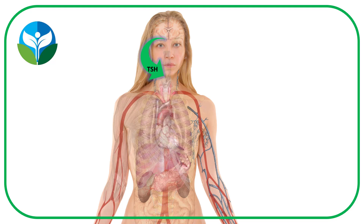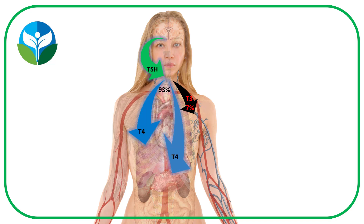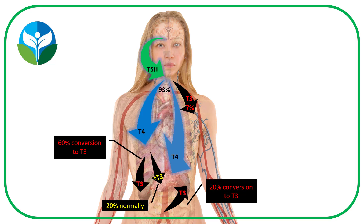When your body senses that thyroid hormone is low, the pituitary in the brain tells the thyroid by TSH, thyroid stimulating hormone, to start producing more thyroid hormone. And when it does so, it starts to produce about 7% T3, the active thyroid hormone, and 93% T4. Those hormones are actually converted in the liver and in the gut to T3 and reverse T3.